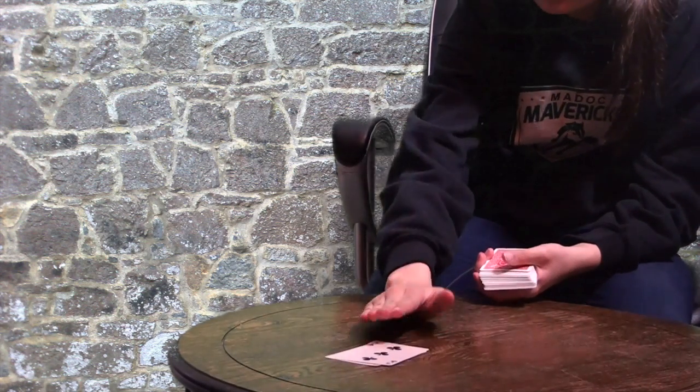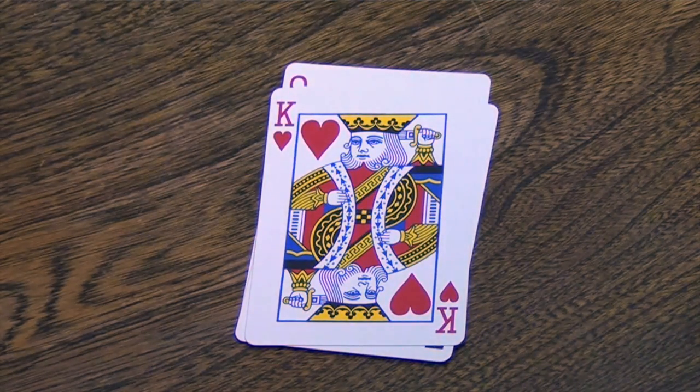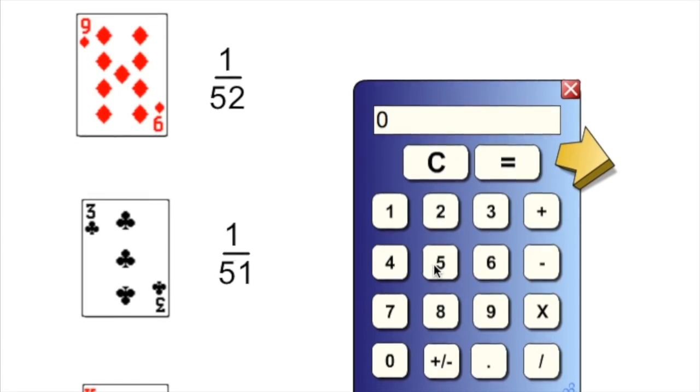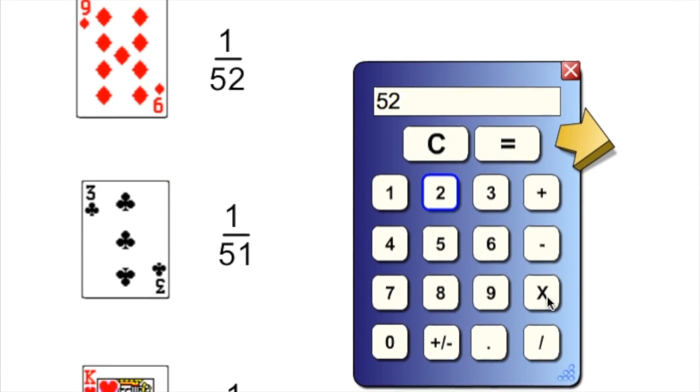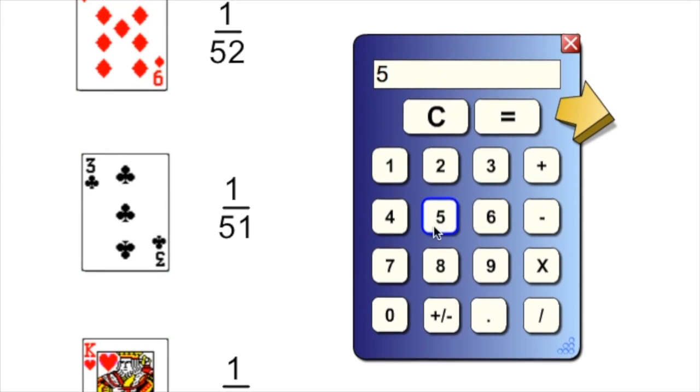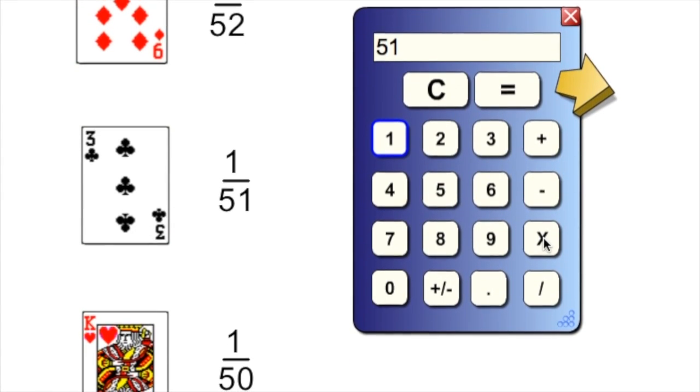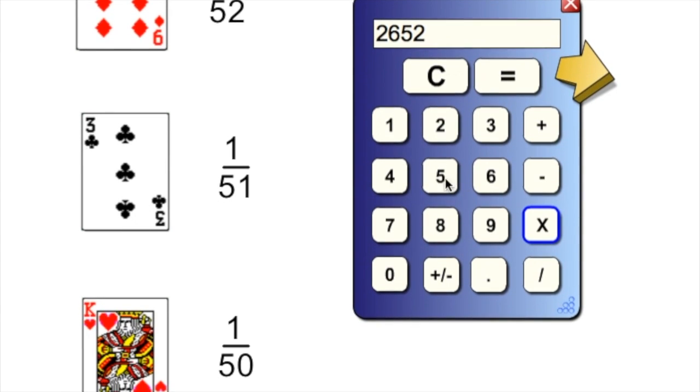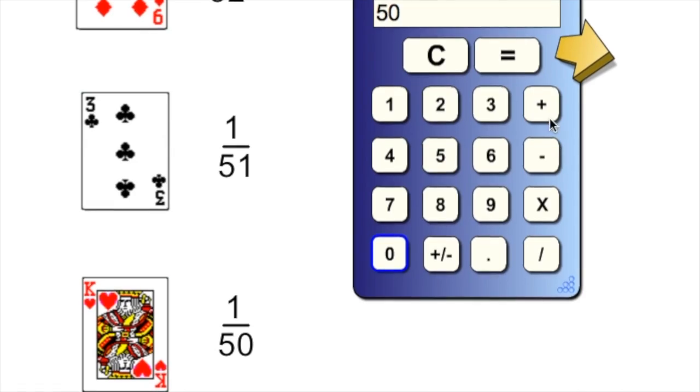We'll flip over the first three cards in this shuffled deck. There were 52 possibilities altogether, so the nine of diamonds had one in 52 chances of being selected. The three of clubs is second and had one in 51 chances of being selected because the first card, the nine of diamonds, is out of the deck. And the third card, the king of hearts, had one in 50 chances of being selected because the first two cards now are out.